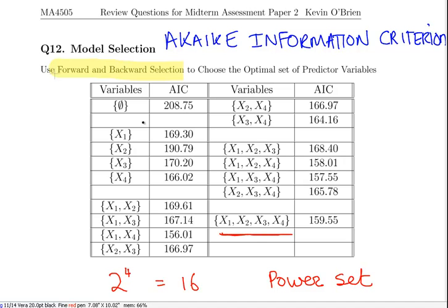We have the empty set where there is no predictor variables, four cases where the response variable Y is predicted by one predictor variable only, six cases where the response variable is predicted by two predictor variables, four cases where it is predicted by three predictor variables, and one case where it is predicted by all four. First off, Forward Selection.